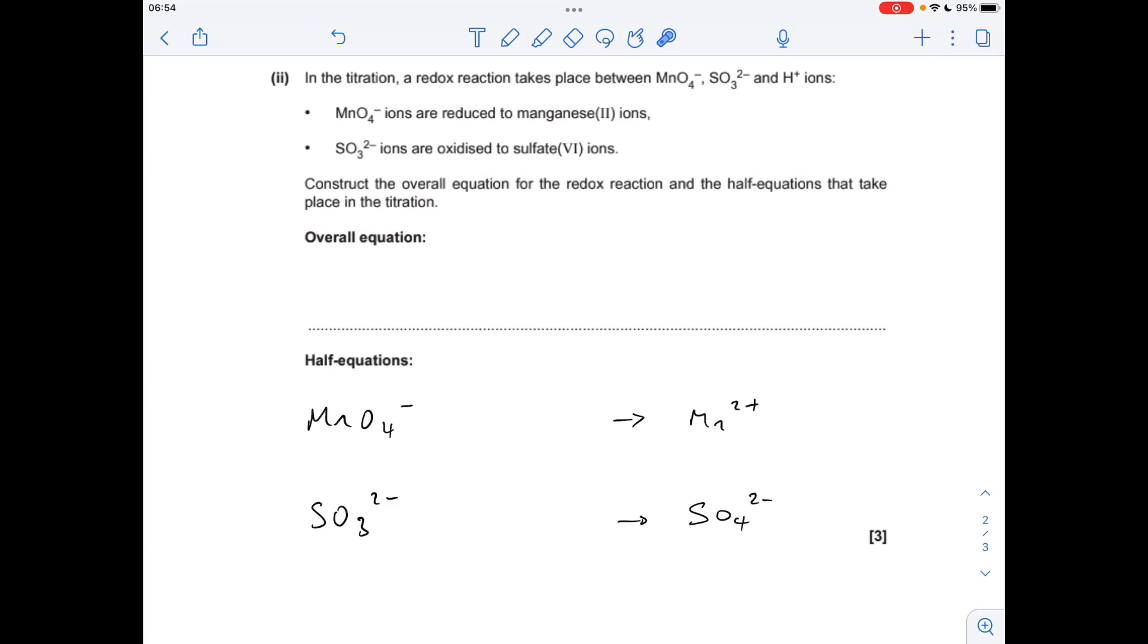Okay, so the first thing we'll do is summarize this information here. So we're told that the MnO4- ions are reduced to manganese 2+ ions, so we know that turns into that. And the sulfite ions are turned into sulfate 6 ions, so that to that.